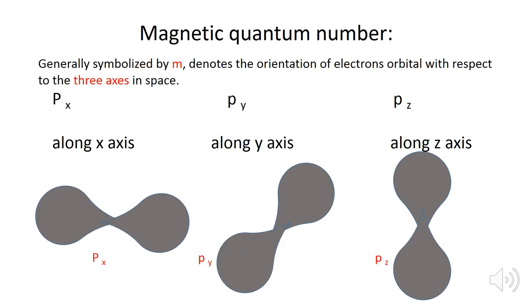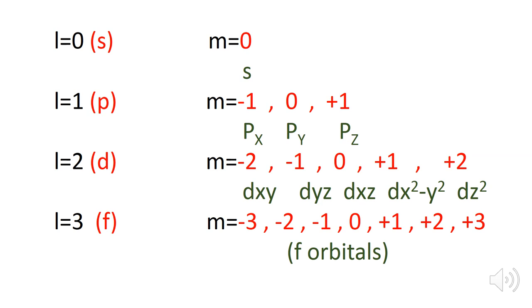The magnetic quantum number, symbolized by m or ml, denotes the orientation of the electron's orbital with respect to the three axes in space — the x-axis, y-axis, and z-axis. When l equals zero, the magnetic quantum number m is also zero, meaning only one orbital exists — the s orbital. When l equals one — the p subshell — the magnetic quantum number ranges from minus one to plus one, so the p subshell has three orbitals.